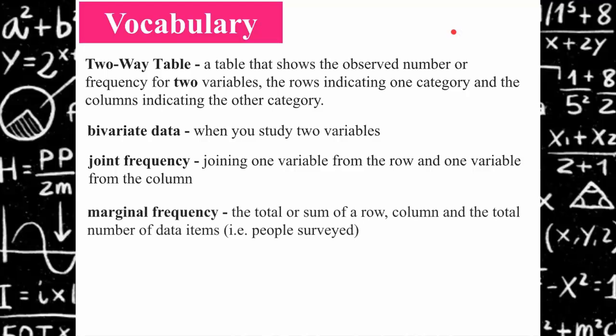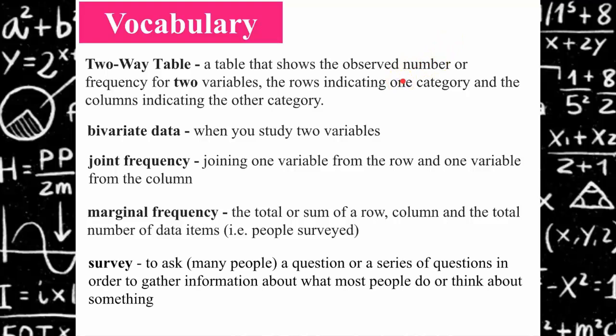Marginal frequency is the total sum of a row or a column, or it could represent the total number of people surveyed in the table. So it's the number of males surveyed, or the number of people who like vanilla ice cream. When you talk about a marginal frequency, there aren't two descriptors attached to your value. A survey is when you ask many people a question or series of questions to gather information about what most people think, usually to show a relationship or an opinion.